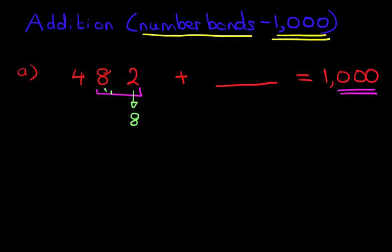But then we've got 1 here. 8 plus 1 is 9, so this has now effectively become 9. For 9 to become 0, we need to add 1. So 82 plus 18 equals 100.